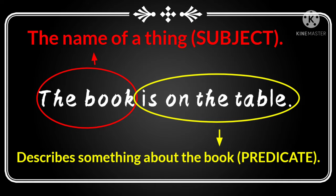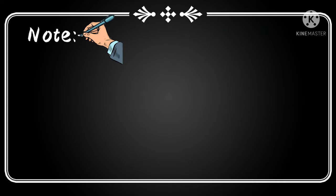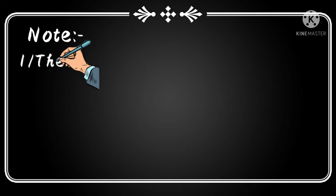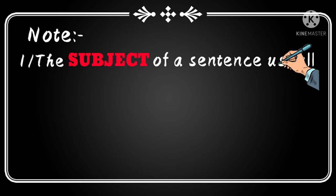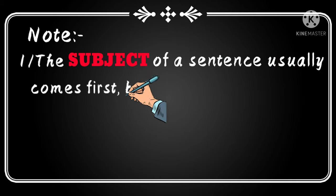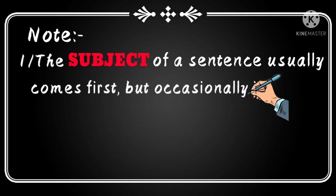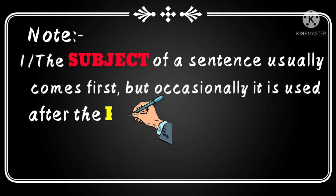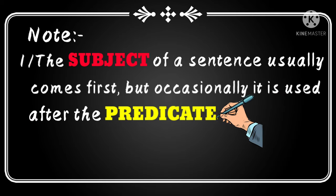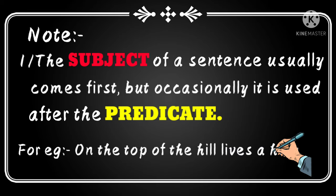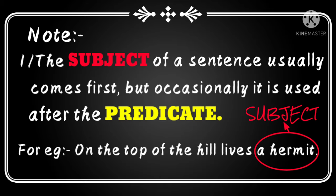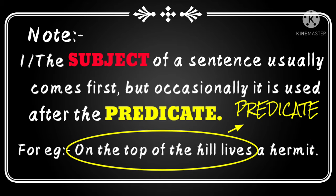Now here there are some points to be noted. Number one: the subject of a sentence usually comes first, but occasionally it is used after the predicate. For example: 'On the top of the hill lives the hermit.' Here we can see the subject is written at the last while the predicate is in the front part.